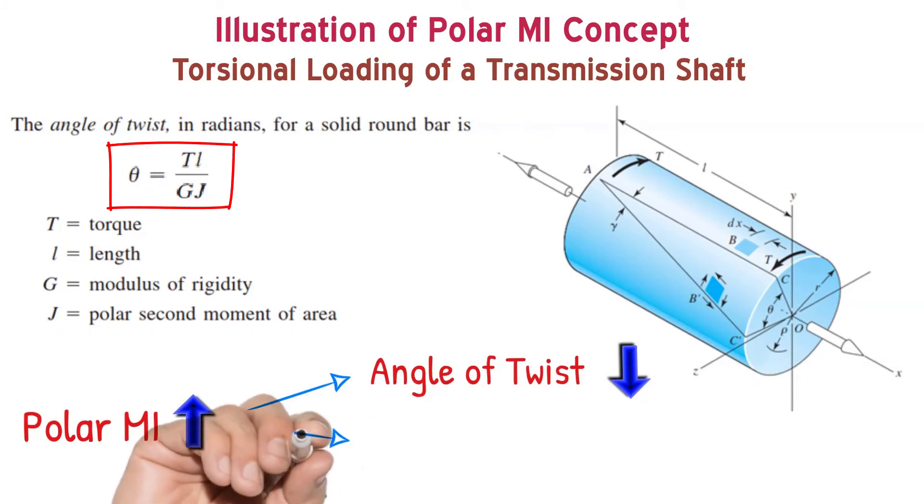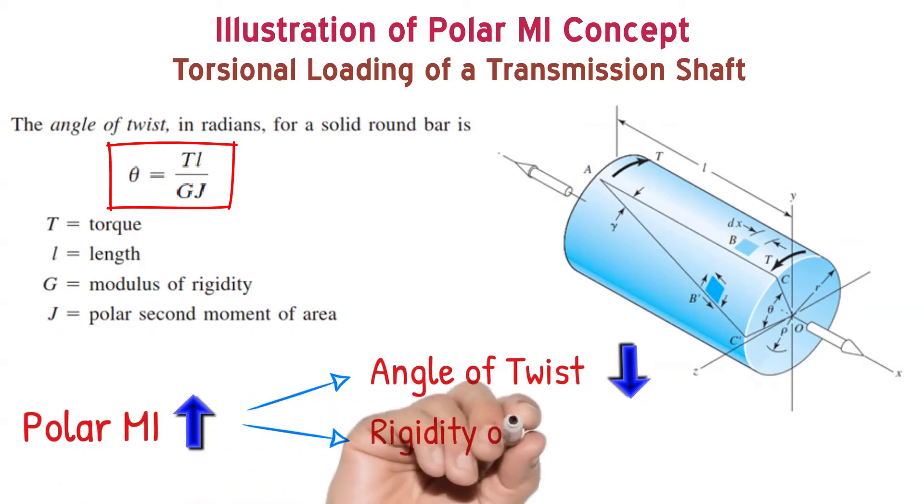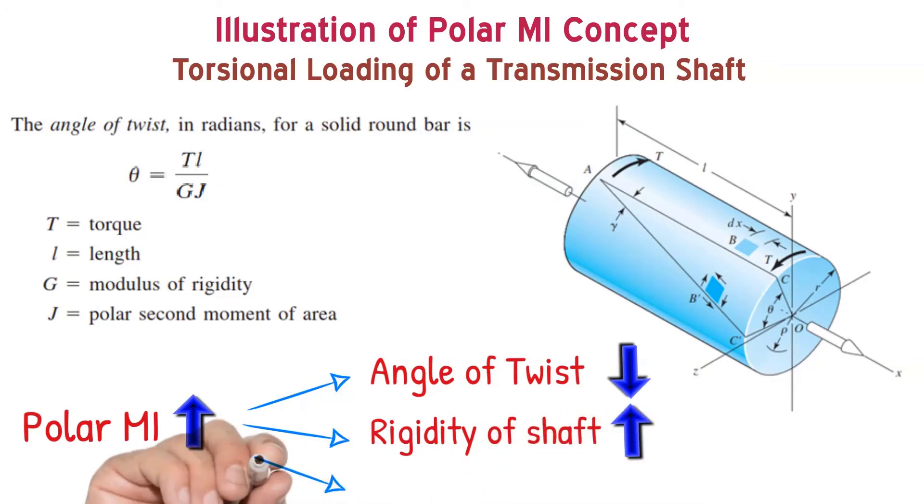When polar moment of inertia is small, the angle of twist will be lesser. It means the shaft is more rigid. When shaft is more rigid, it will enable one to transmit more power.